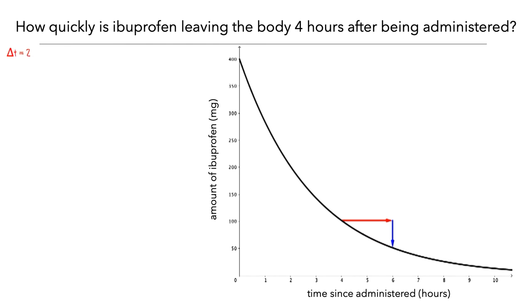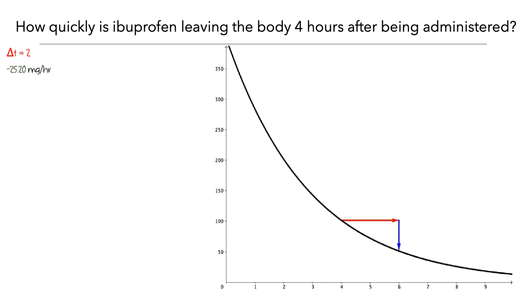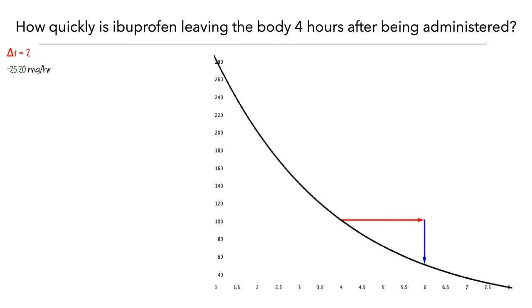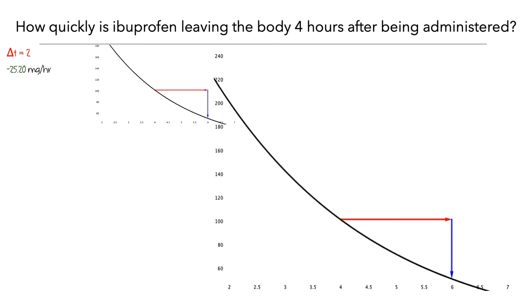We can again calculate the average rate of change by dividing the change in f by the change in t. So when delta t is 2 hours, the average rate was –25.20 mg per hour. Let's zoom in a bit to see this better. We'll keep this image on the screen to compare with some other approximations.